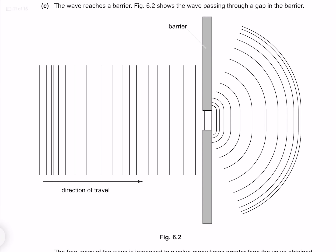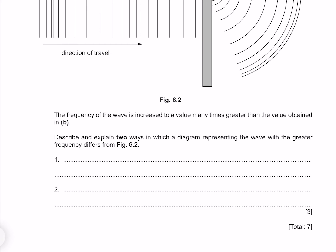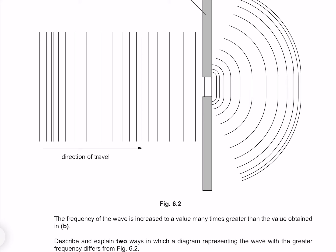The wave reaches a barrier and figure 6.2 shows the wave passing through a gap in the barrier. The frequency of the wave is increased to a value many times greater. Describe and explain two ways a diagram of the higher frequency wave differs from figure 6.2. If we have a greater frequency, the compressions will be closer together, and we will also see less bending around the edges, because shorter wavelengths diffract less.